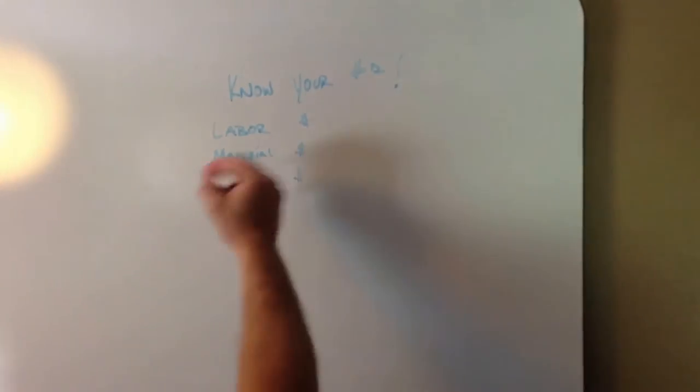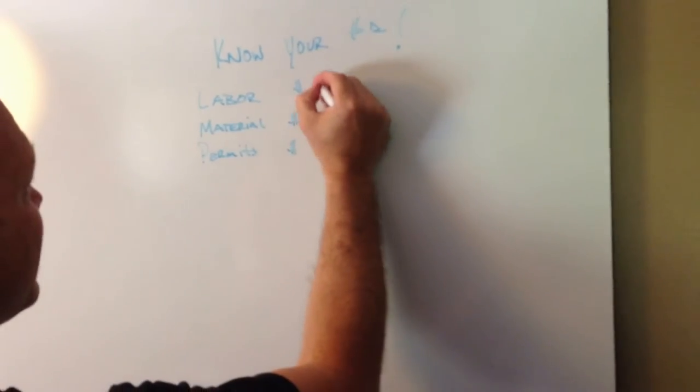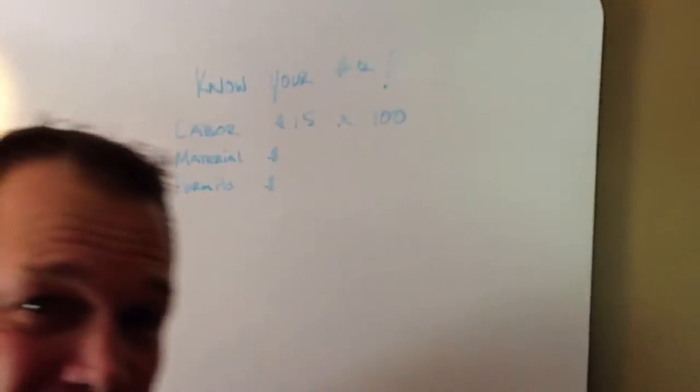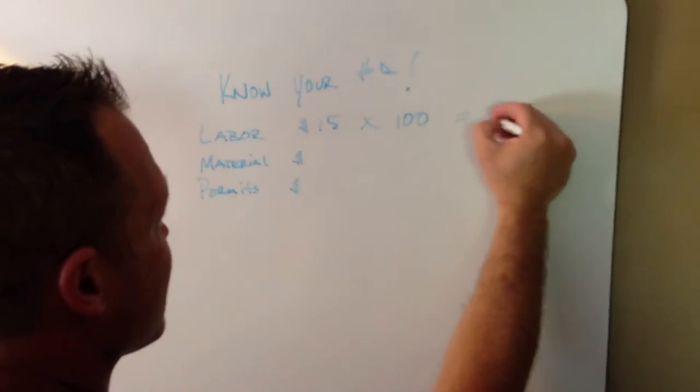So check this out. Let's pretend you build decks. You've got a guy who makes $15 an hour and he takes 100 hours to build that deck. That's $1,500.